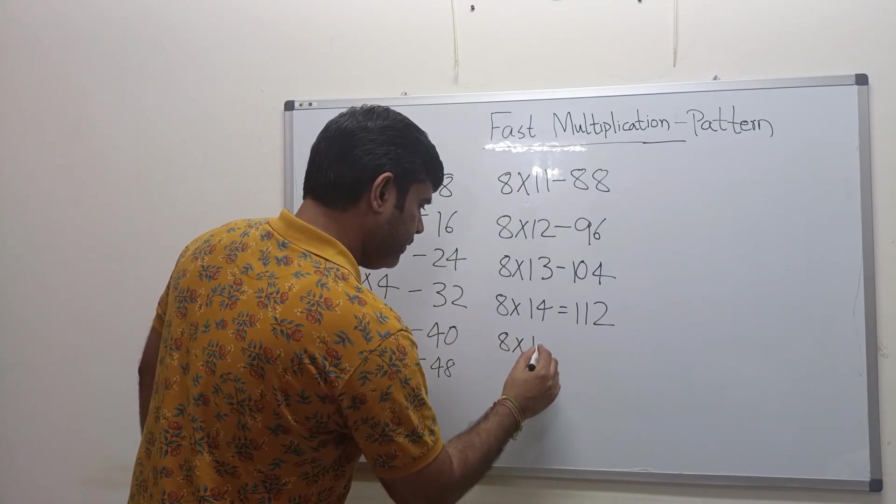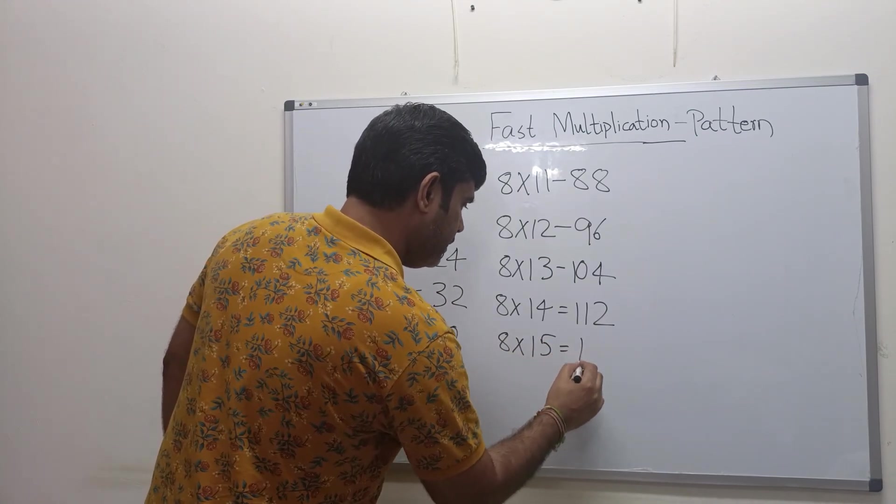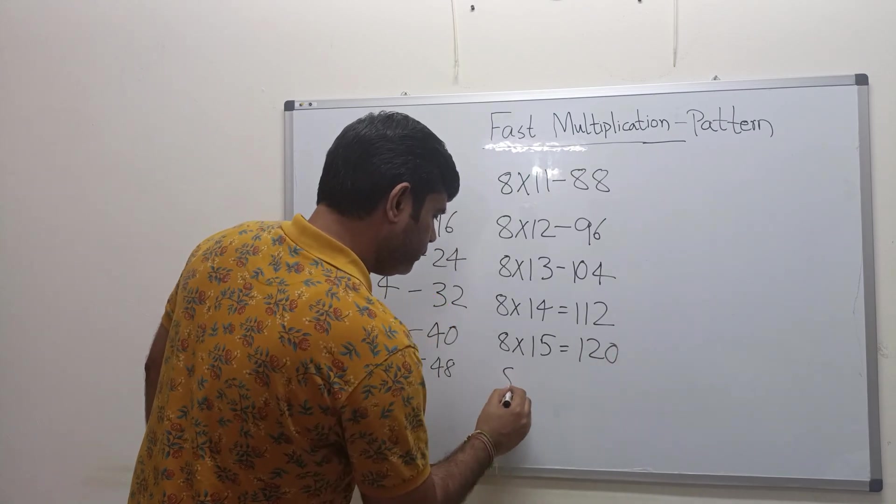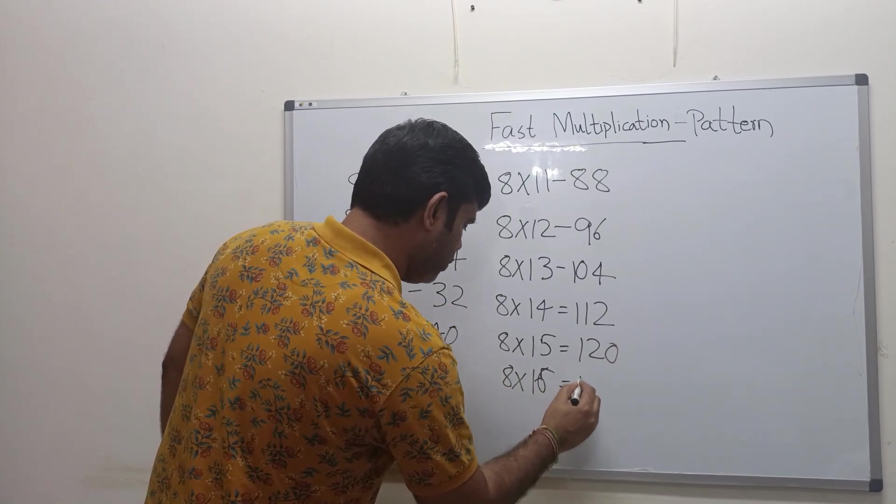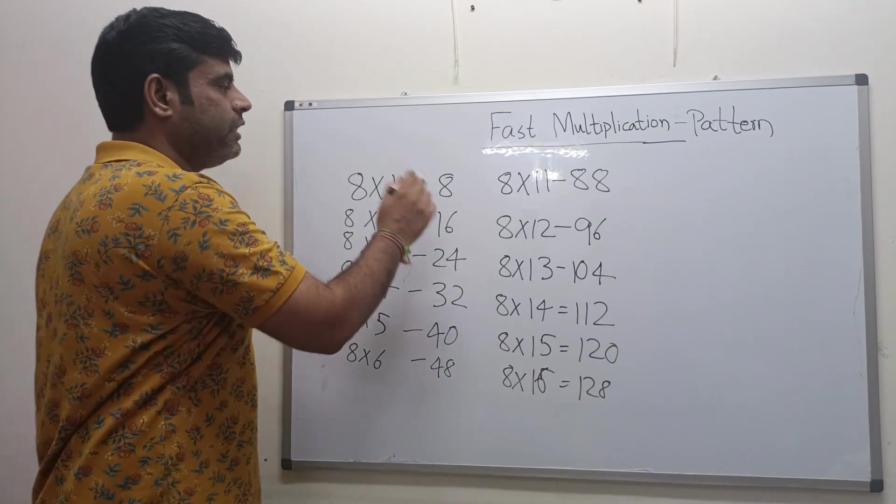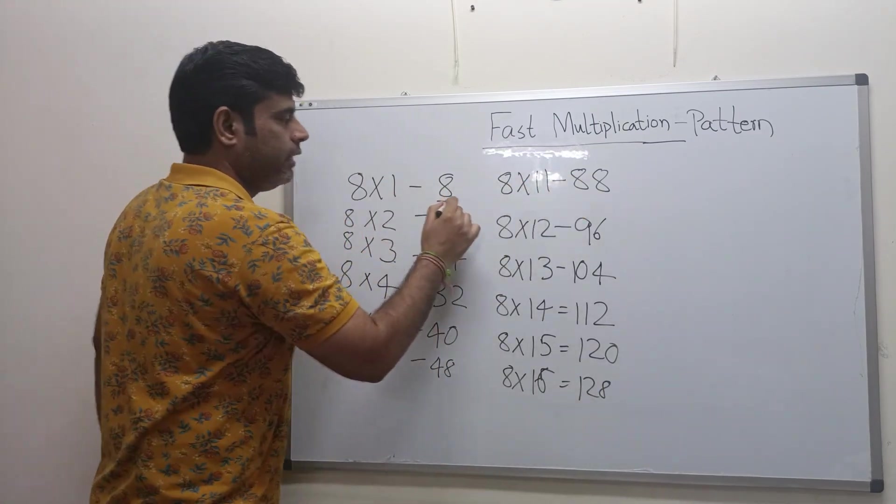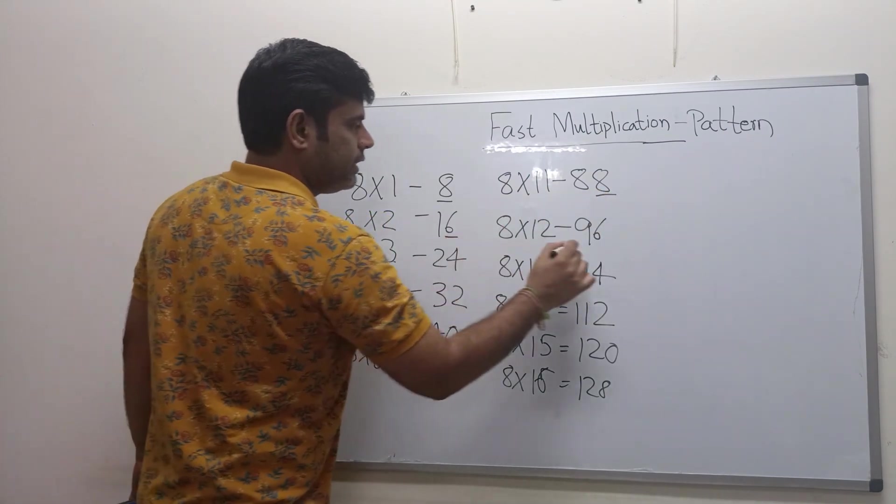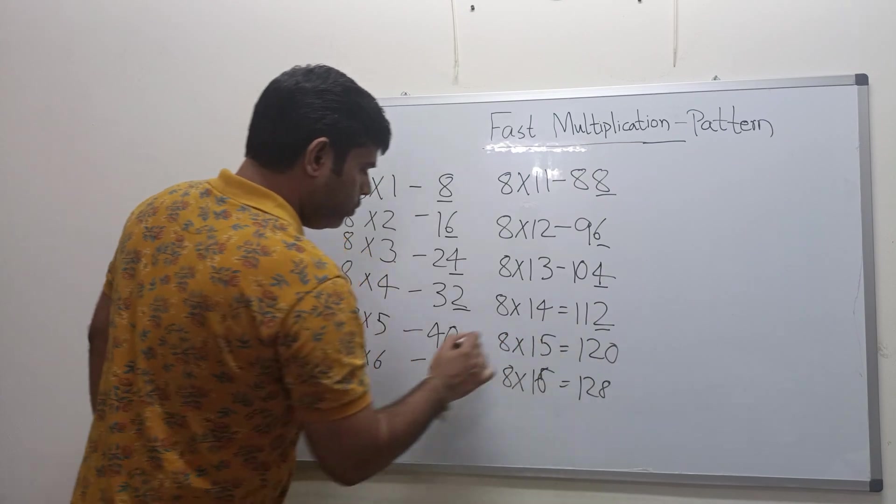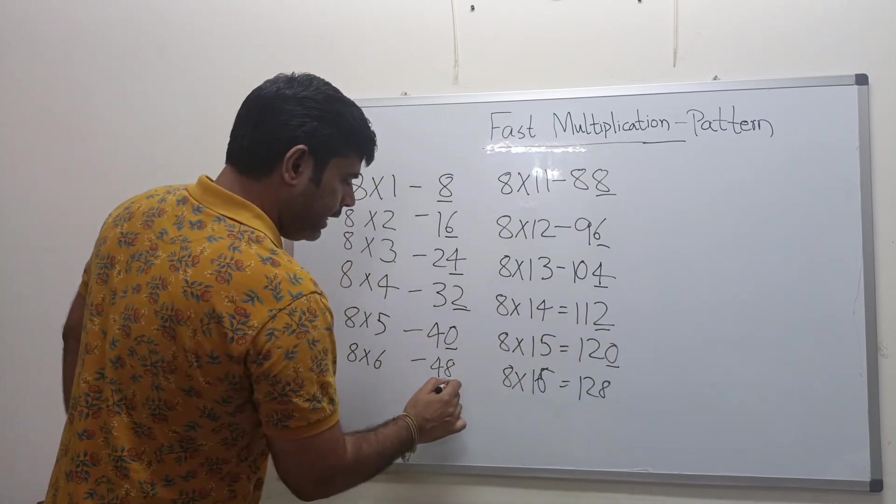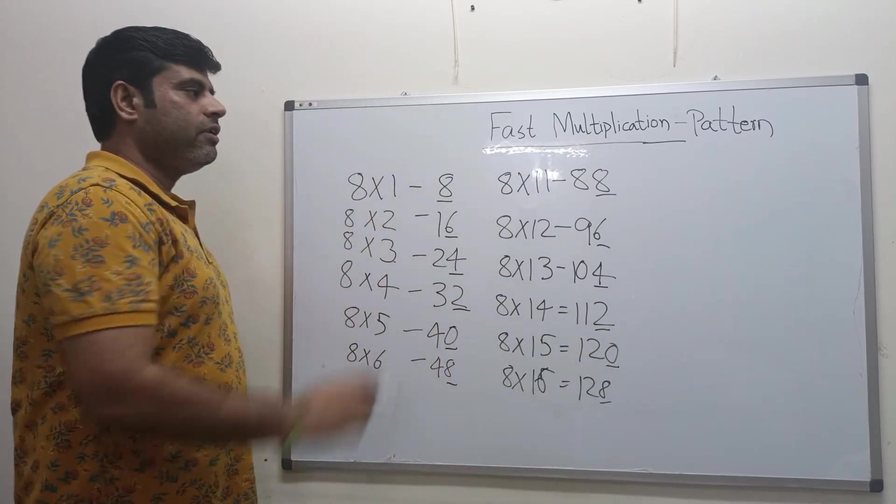Have you understood the pattern? If you see the digit, ones digit is same: 8, 8, 6, 6, 4, 4, 2, 2, 0, 0, 8, 8. So all the ones digits are same.